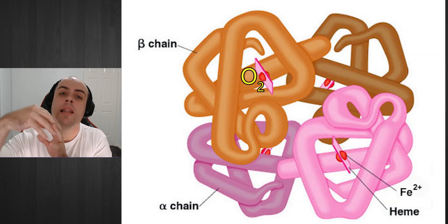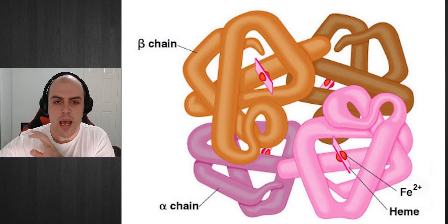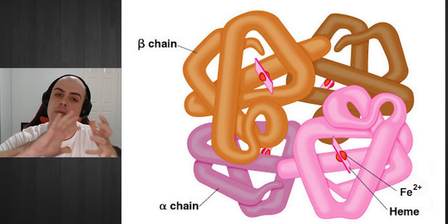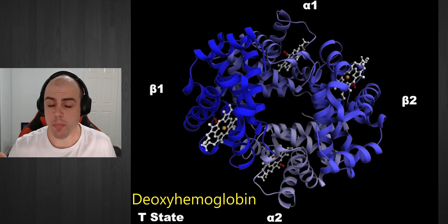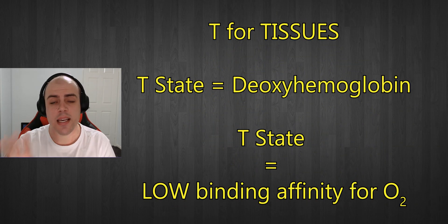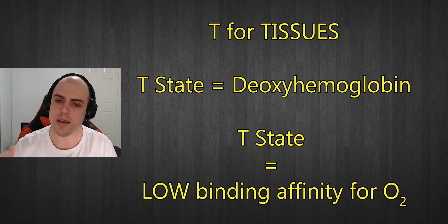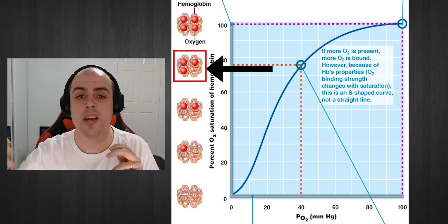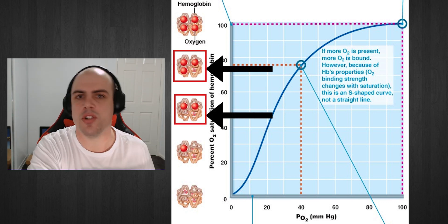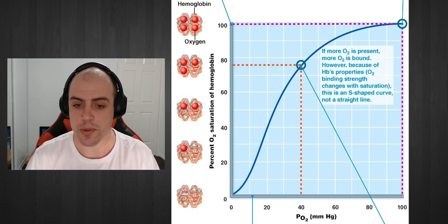Now as oxygen leaves hemoglobin, it's going to cause that hemoglobin to revert back to its T state. Now why is this particularly important? Because remember T for tissues, and T state has a lower binding affinity, so it means as that first oxygen molecule leaves, it's going to make it easier for the second oxygen molecule to leave and be delivered to the tissues.